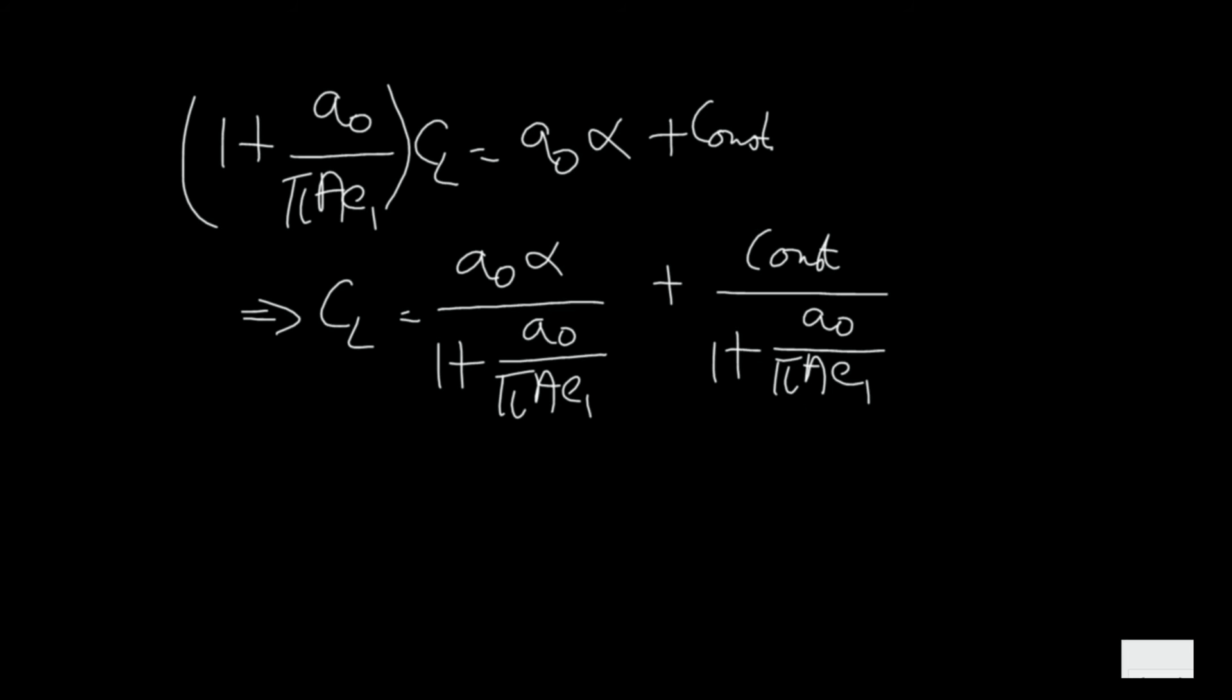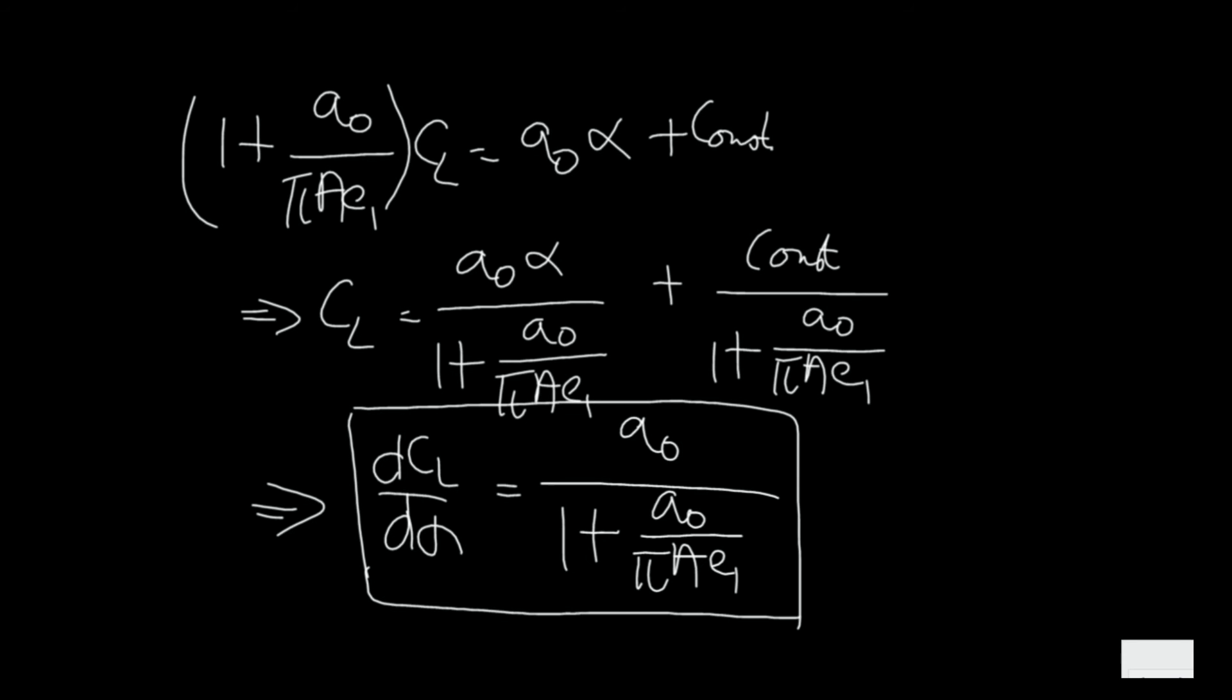Now to get the lift slope of the wing we can differentiate this. So dCL/dalpha is a0 divided by 1 plus a0 divided by pi A e1. So this is the new lift curve slope of the wing.